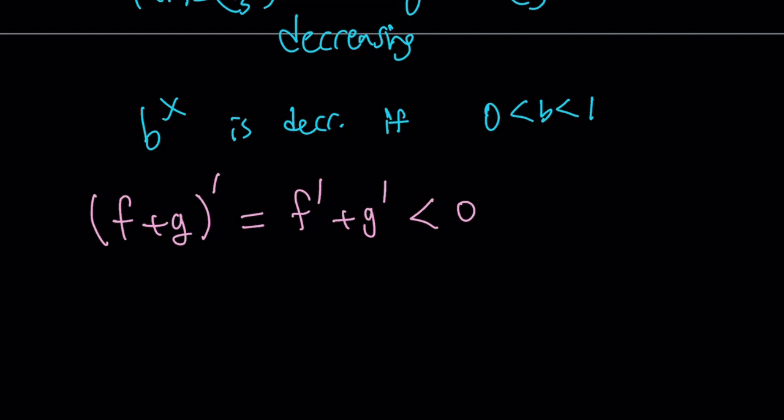So we have a decreasing function that intersects a horizontal line. Therefore, there's only going to be one intersection point.